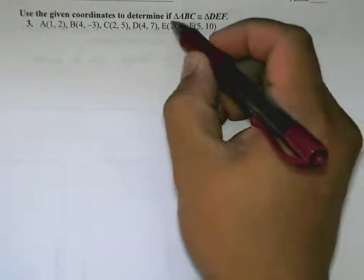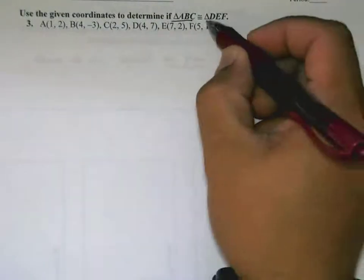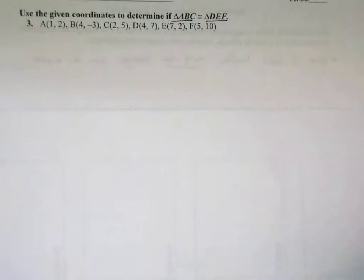Hey students and welcome to the continuing lesson on the side-side-side postulate. Here we're asked to determine if triangle ABC and triangle DEF are in fact congruent to each other. Instead of being given a picture, we're just given some coordinates.